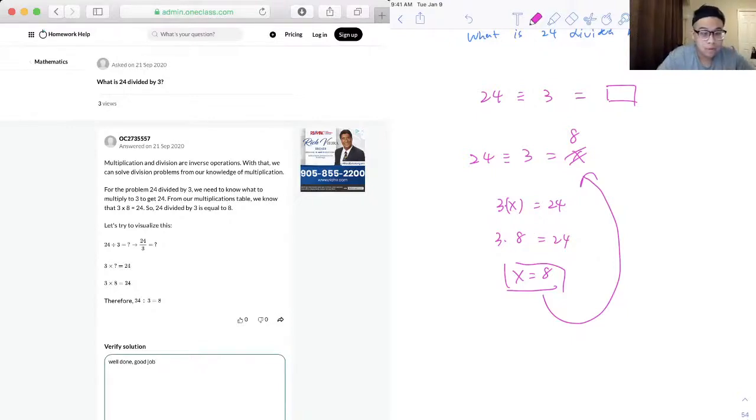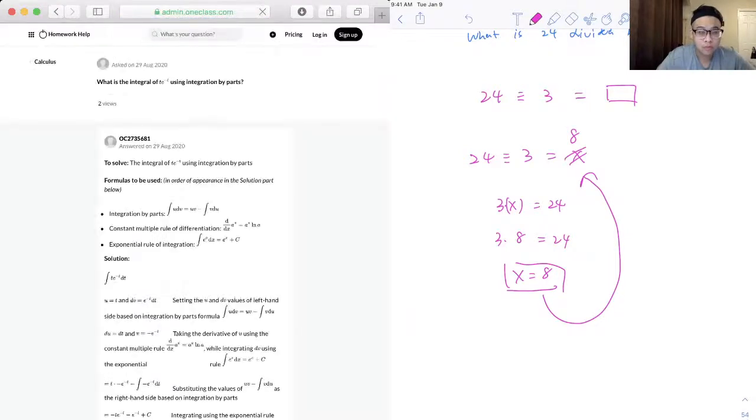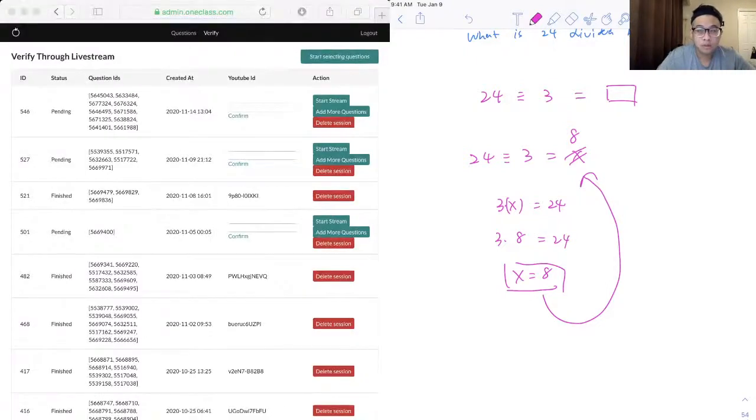Yep. So, you have to think about 4 times 8 is equal to 9, and it's equal to 7, and you're not going to know that 3 times 8 is equal to 9.